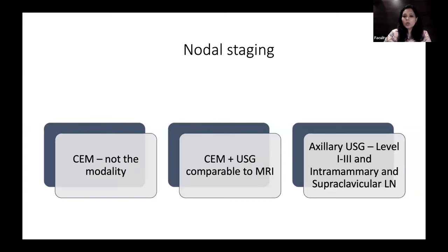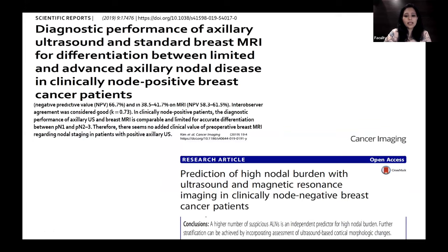For nodal staging, CEM — like mammography — is not the right modality. However, CEM combined with ultrasound is comparable, and a good axillary ultrasound can pick up lymph nodes from level one to three, and in selective cases intramammary and supraclavicular nodes. Studies confirm comparable performance between axillary ultrasound and standard breast MRI. CEM is not the modality of choice for axillary staging, but axillary ultrasound is always performed alongside.